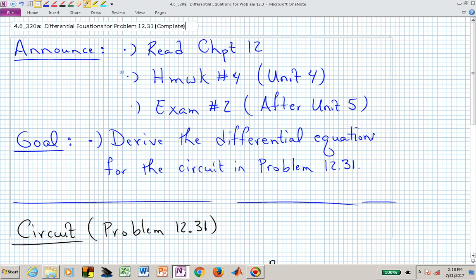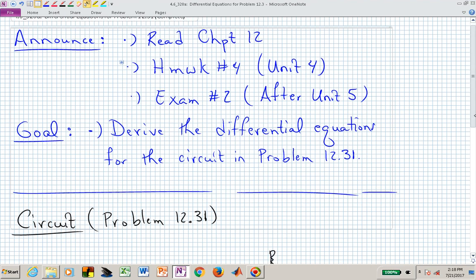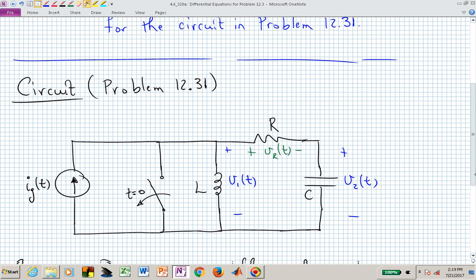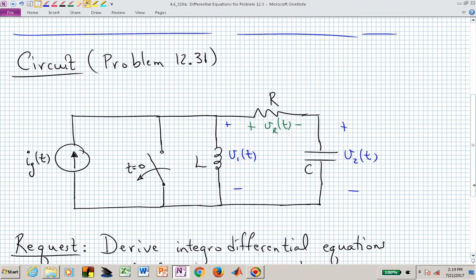In this video, what we want to do is derive the differential equations for the circuit in Problem 12.31. Here is the circuit that's given to us. Note that before t equals 0, this current source is just circulating on the left, and we're assuming there's no energy stored in the inductor or the capacitor when we throw the switch open at time t equals 0.